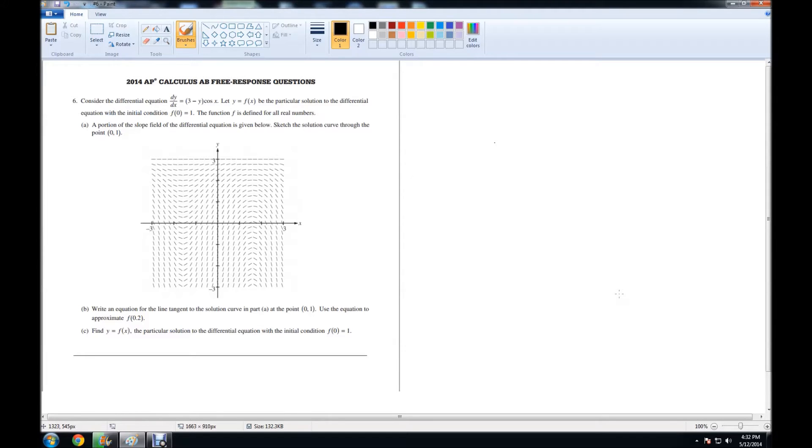Let's read part A. A portion of the slope field of the differential equation is given below. Sketch the solution curve through the point (0,1). For this part, there's not really much calculus involved. You just look at the line and kind of follow the lines. So let's start with the point (0,1), which is right over here.